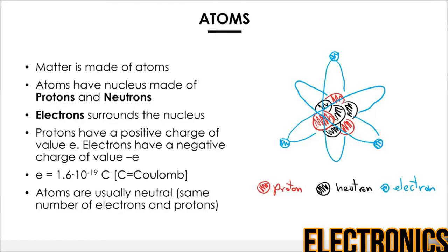Matter is made of atoms — we are made of atoms, everything we touch is made of atoms. I'm bringing up atoms now because I want to introduce the electron, which is required to explain electric current. On the right, I try to represent the structure of the atom. There is a central part called the nucleus, made up of protons and neutrons, and then we have a third type of particle — the electron — floating around the nucleus as a cloud.